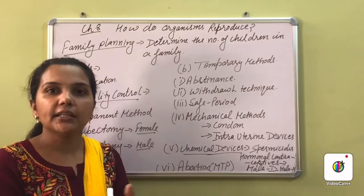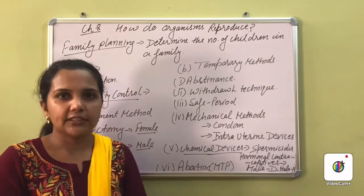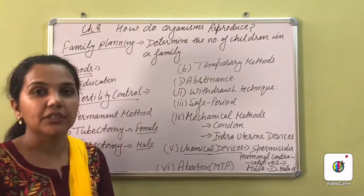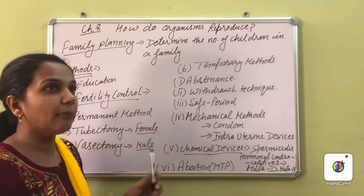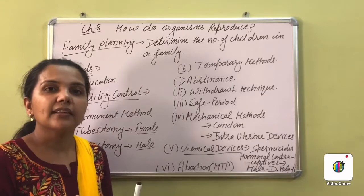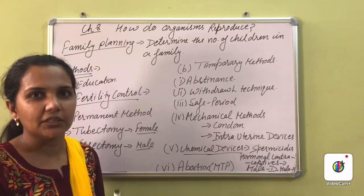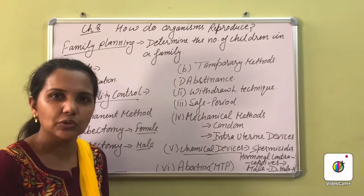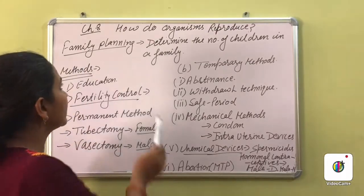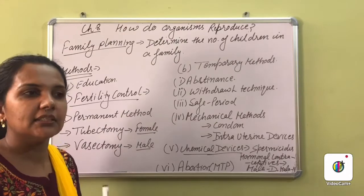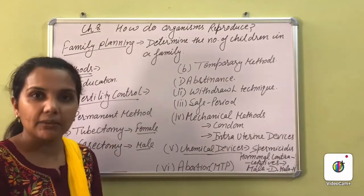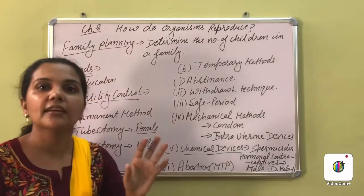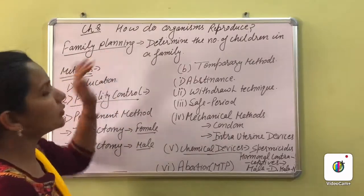Why is there a need for family planning? First, to maintain an age gap — generally the first child is born, then after a 2-3 year gap the second baby is made. It is also done by considering our resources: how much money we have, how much we earn, how many children we can afford. All of that is family planning.